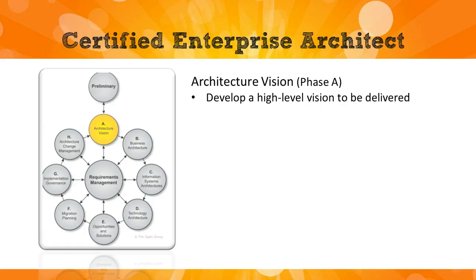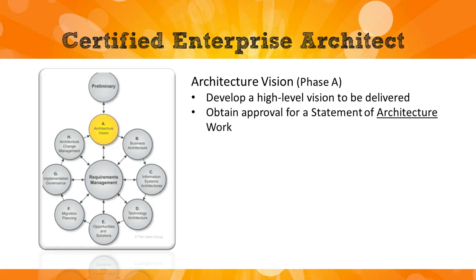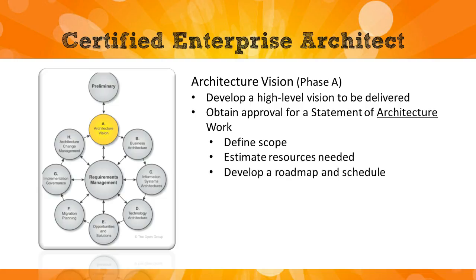The main purpose of the vision phase is to develop the high-level vision to be delivered. You may also obtain the approval for the statement of architecture work. The statement of architecture work contains things such as a scope, resources, a roadmap and a schedule, any KPIs and metrics, and a communications plan for the architecture work.